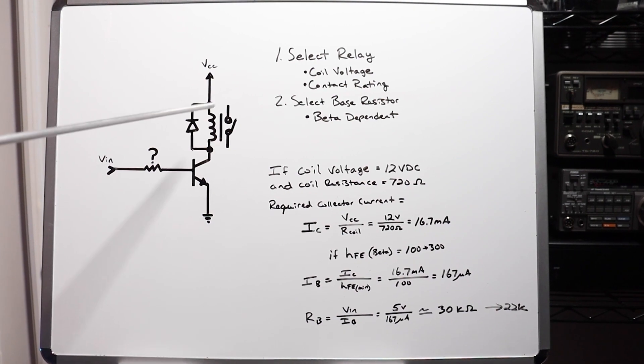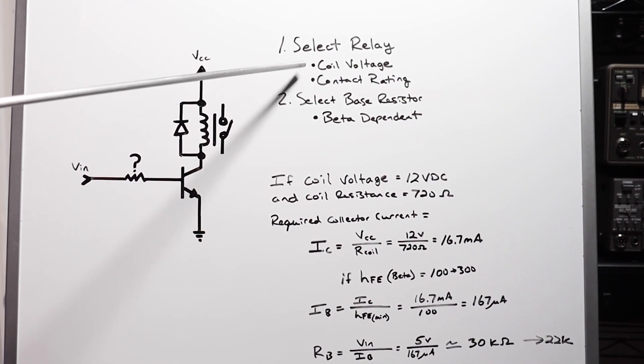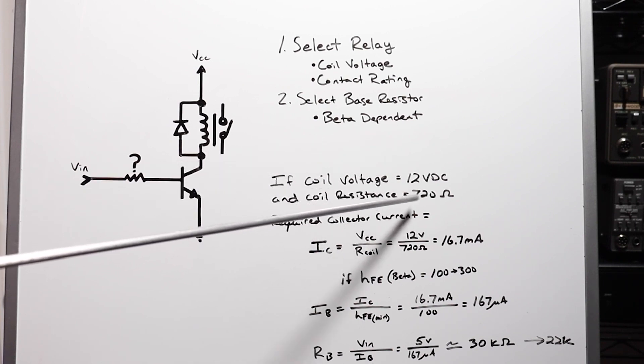So the first step in putting a relay in your circuit is going to be obviously to select the relay based on the coil voltage. These are always specified based on the voltage you're going to supply to it, and the contact rating. These guys here, the thing you're going to switch. Is it AC? Is it DC? What's my maximum voltage and current rating that these guys are going to see? And you're going to have to shop around. So that's the fun part. The particular relay that I'm going to be using has a coil voltage of 12 volts DC and it has a coil resistance specified in the data sheet of 720 ohms.